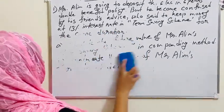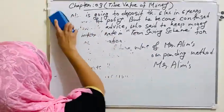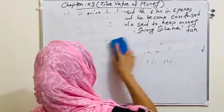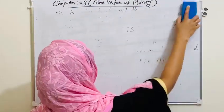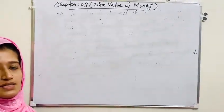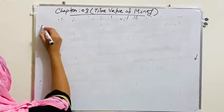Today's requirement is: first, calculate the future value of Mr. Ali's term saving scheme in compounding method. And second, evaluate the logic of Mr. Ali's investment decision.